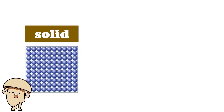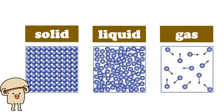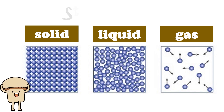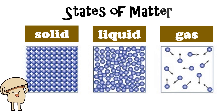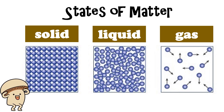All matter exists as solids, liquids, or gases. These are called the states of matter. Matter can change from one state to another.